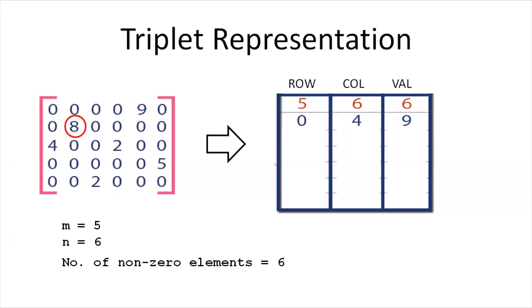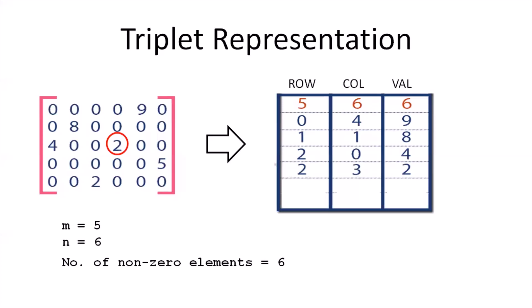The next non-zero element is eight, with row number one and column number one. Therefore, the entry for eight is one, one, eight. Next we have four, with row number two and column number zero — entry: two, zero, four. The next element two has row number two and column number three — entry: two, three, two. Element five has row number three and column number five — entry: three, five, five. And the last non-zero element two has row number four and column number two — entry: four, two, two.